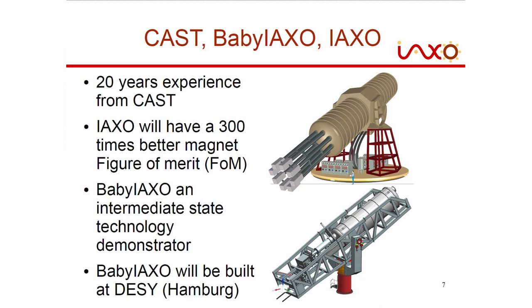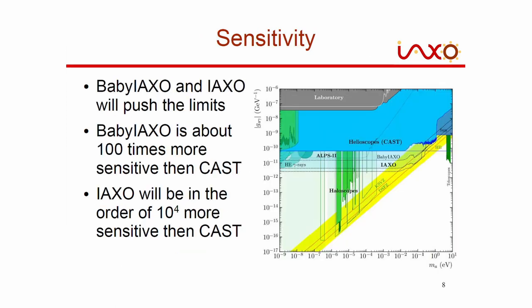Baby IAXO has only a 10-meter-long magnet but uses basically the same magnet technology, with only two magnet bores. It is quite a bit smaller and will be built - or start to be built - at DESY. On the exclusion plots, we have the CAST limit shown in light blue. With Baby IAXO, we will push this slightly down, a bit less than one order of magnitude. With the final IAXO, we will push it by about one order of magnitude or even more, depending on how the magnet and experiment perform.